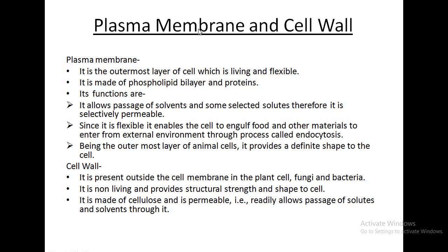First, plasma membrane and the cell wall. The plasma membrane is the outermost layer of the cell in animal cells, which is living and flexible. It is made up of a phospholipid bilayer and proteins. Its functions are: first, it allows passage of solvents and some selected solutes, therefore it is selectively permeable. Second, since it is flexible, it enables the cell to engulf food and other materials from the external environment through the process called endocytosis. This is how the unicellular amoeba takes in its food from its external environment. Being the outermost layer of animal cells, it provides a definite shape to the cell.